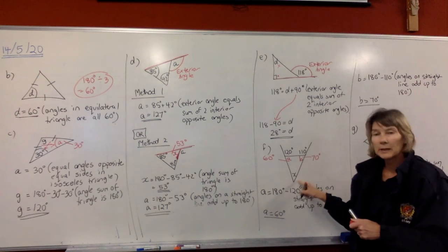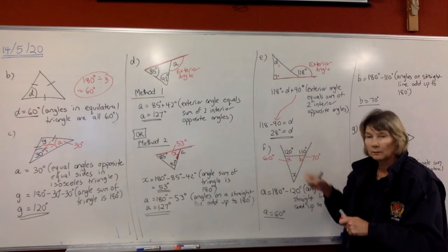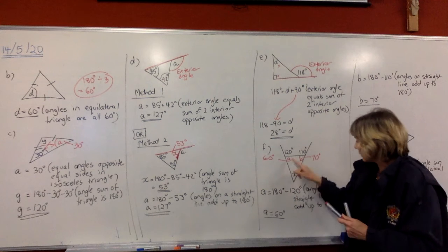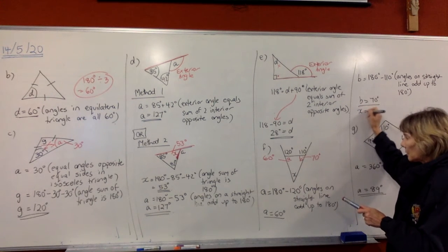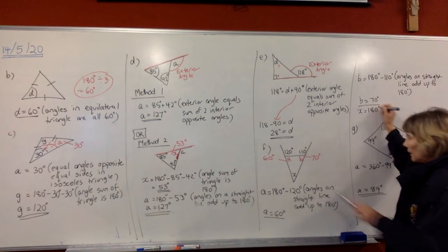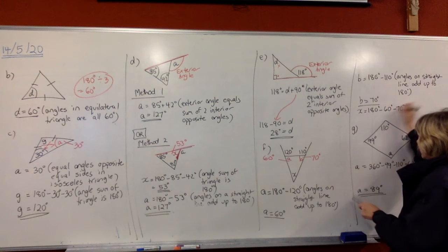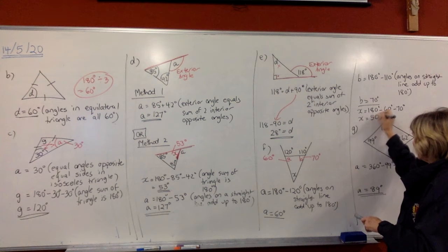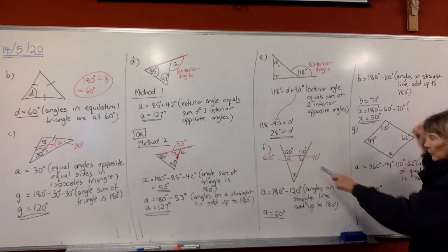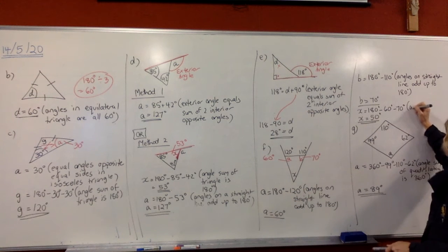Now we can look inside the triangle to find X. The angles in that triangle add up to 180, so to find X do 180 take away the 60 and the 70. Using the calculator that gives you 50 degrees. The reason: the angle sum of a triangle is 180 degrees.